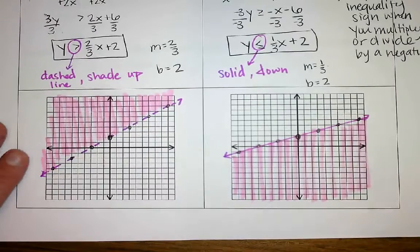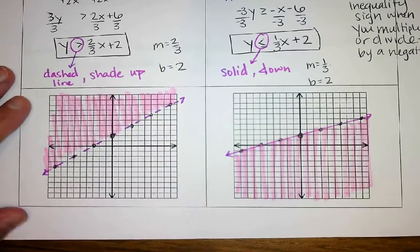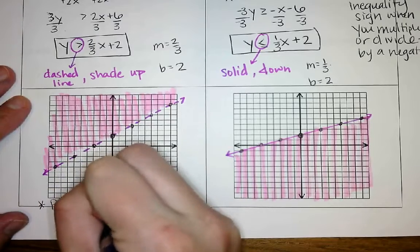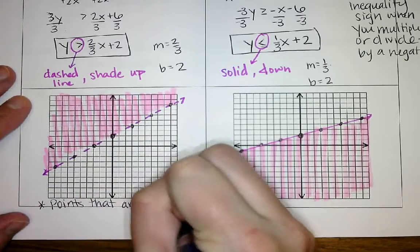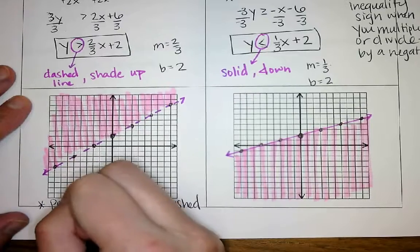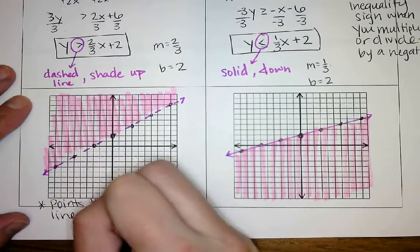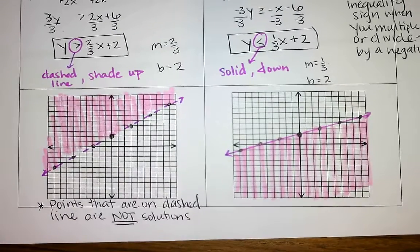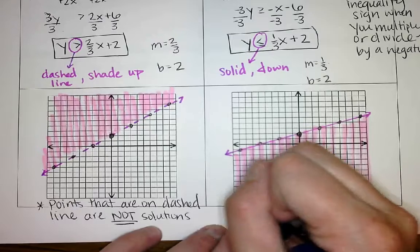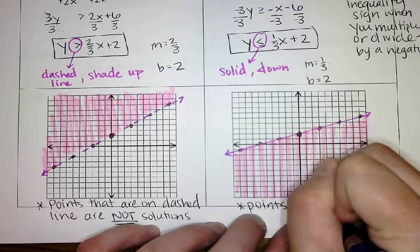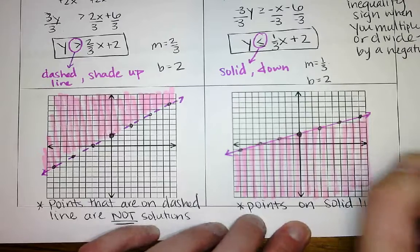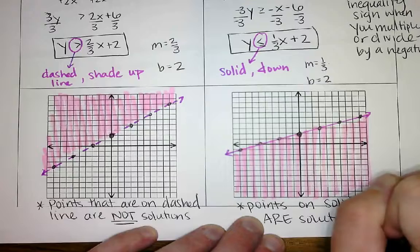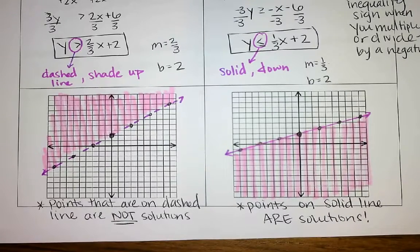Quick refresher: points that are on the dashed line are not solutions. If they are on a dashed line, they are not a solution. But points on the solid line are solutions. If it's on a dashed line — not a solution. Solid line is a solution.